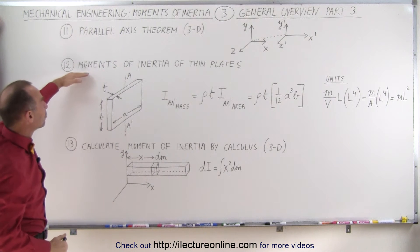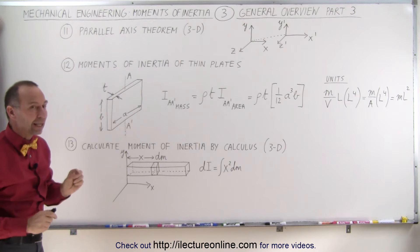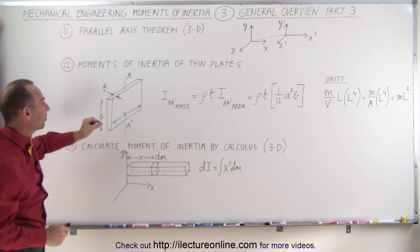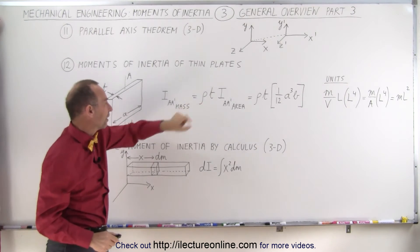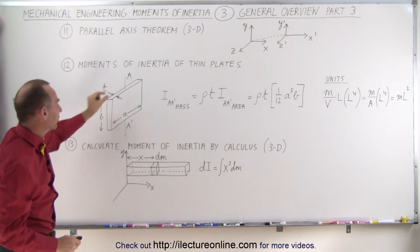Next we're going to look at moments of inertia of thin plates. We're going to assume that they have a uniform density. Here's the symbol for density and a very small thickness t.